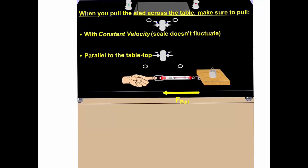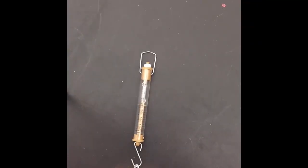It's critical that you understand how to pull the sled in order to generate the friction. Number one, you want to pull slow and steady with a constant velocity. And number two, you want to pull parallel to the tabletop.